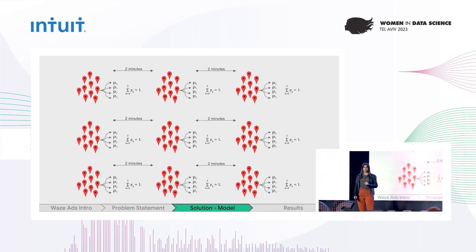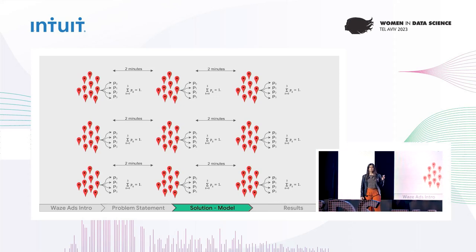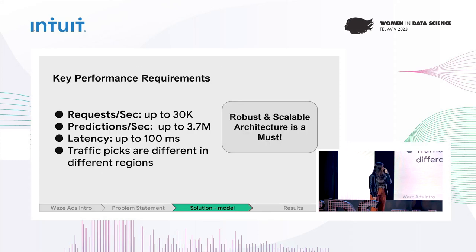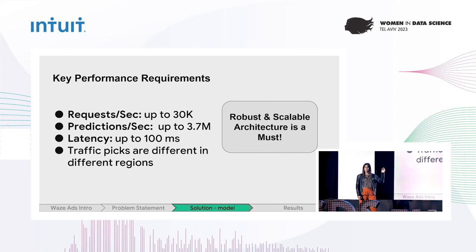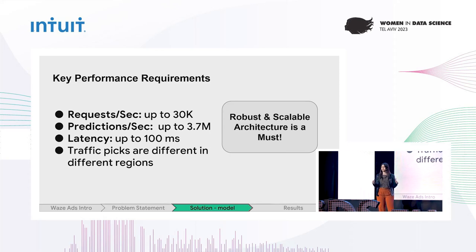You can probably imagine that there are many drives on Waze, so we'd better handle this right. In terms of performance requirements, we need to support up to 30,000 requests per second, with hundreds of candidates in every request — that's up to almost 4 million predictions every second. Ideally, every request should be answered in less than 100 milliseconds in the worst case. Traffic peaks are also different in different regions. So we need a robust and scalable architecture to support all of that.